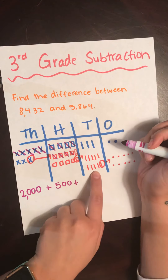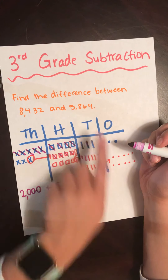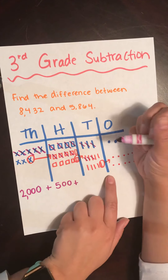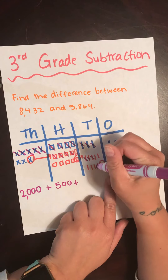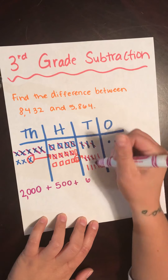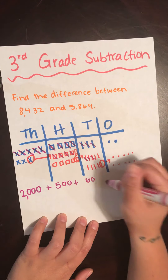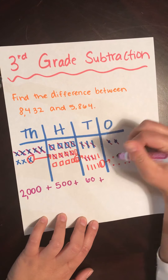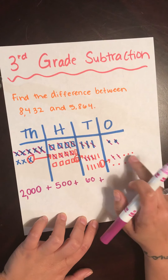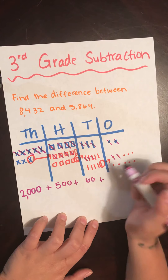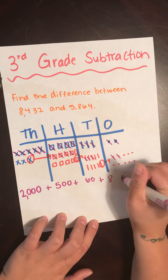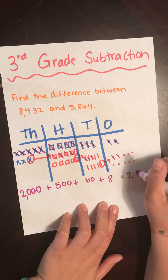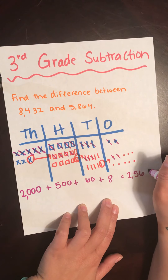Plus, now we need to subtract in our tens — we are taking away 6 tens, so I need to cross off 6: 1, 2, 3, 4, 5, 6. Let's see how many we have left: 1, 2, 3, 4, 5, 6. If we have 6 tens, that means 60. And finally, we need to cross off 4 ones: 1, 2, 3, 4. Then we count how many we have left: 1, 2, 3, 4, 5, 6, 7, 8. So 2,000 plus 500 plus 60 plus 8 is 2,568.